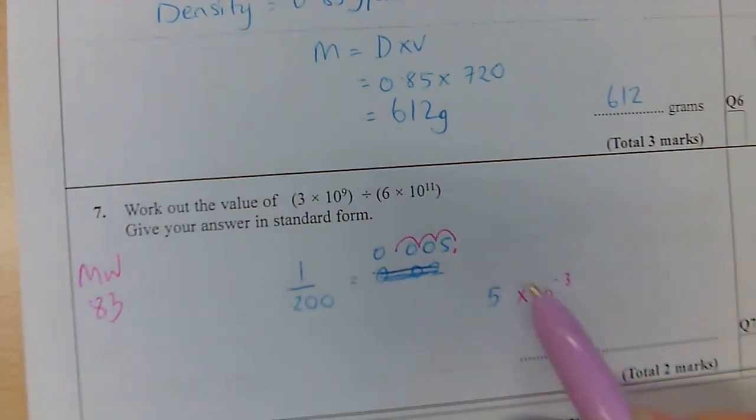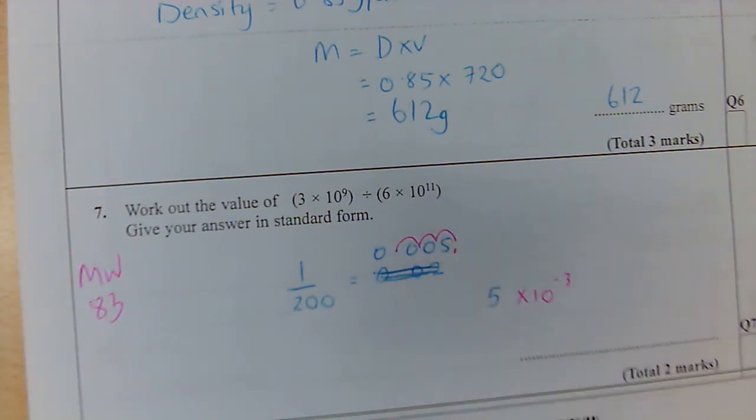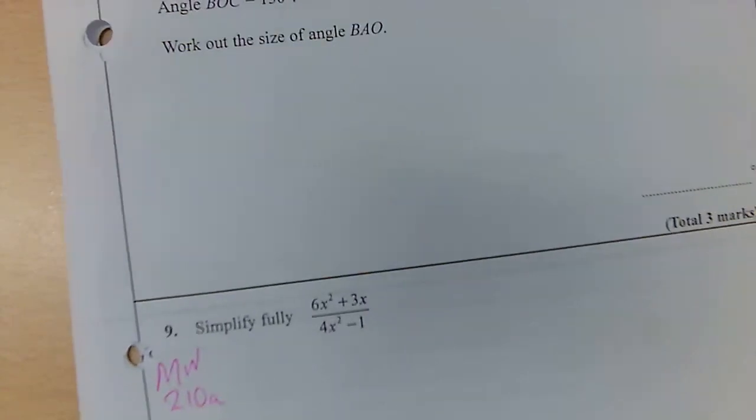What I've actually done and why it works is we've got the 5, and then 1, 2, 3, I've actually divided by 1,000 to get to my number, which is where the minus 3 comes in. Next question.